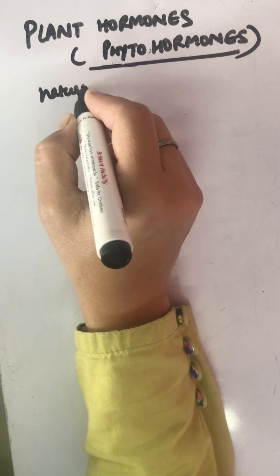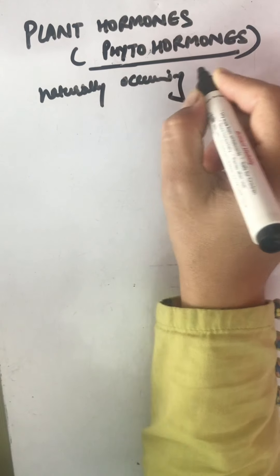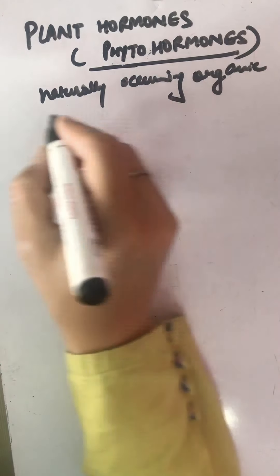Moving to plant hormones or phytohormones — these are naturally occurring organic chemical substances that bring about control and coordination in plants, meaning growth-related activities. These are broadly grouped into two categories: plant growth substances and plant growth regulators, which include promoters and inhibitors.